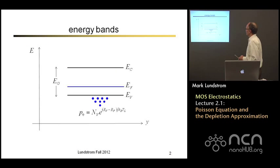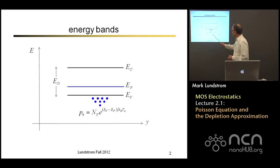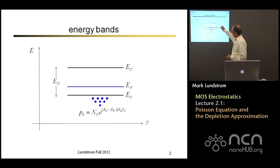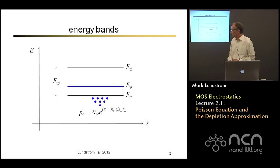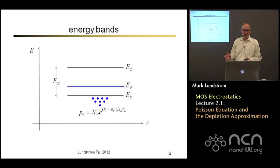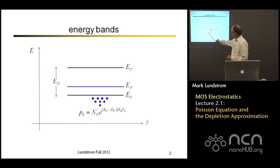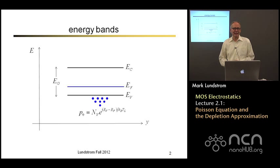Just to refresh our memory, we talked about energy band diagrams. If we have a uniform semiconductor, then the valence band and the conduction band are just constant in space. We talked about Fermi levels. If it's down near the valence band, then we have a significant number of empty states in the valence band and a population of holes. If we can assume Boltzmann statistics instead of Fermi-Dirac statistics, we have a simple relation between the density of holes and the location of the Fermi level with respect to the top of the valence band given by that exponential.